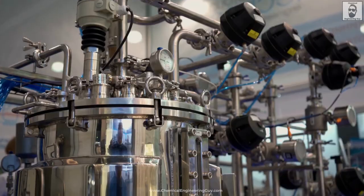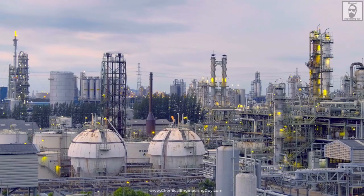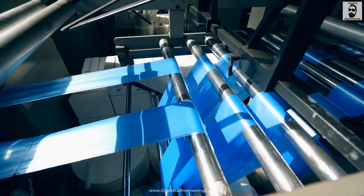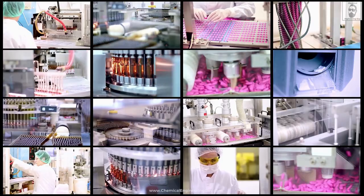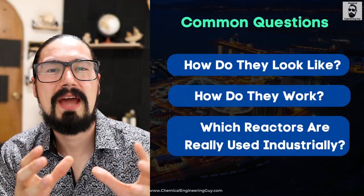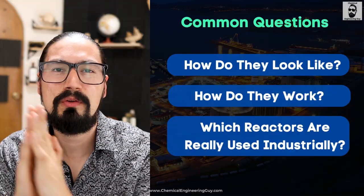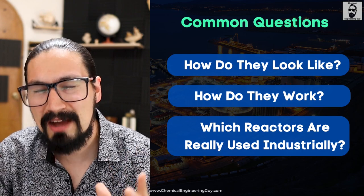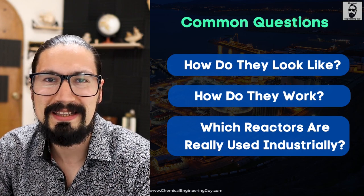Chemical reactors are the heart of chemical processes. They are essential for producing everything from everyday products like plastic and detergents to life-saving medicines and cutting-edge materials. At least that was what I was told back in the day as a student. But I had a lot of questions regarding chemical reactors — how does a chemical reactor look? How do they work? And what are the actual reactors used in the industry?